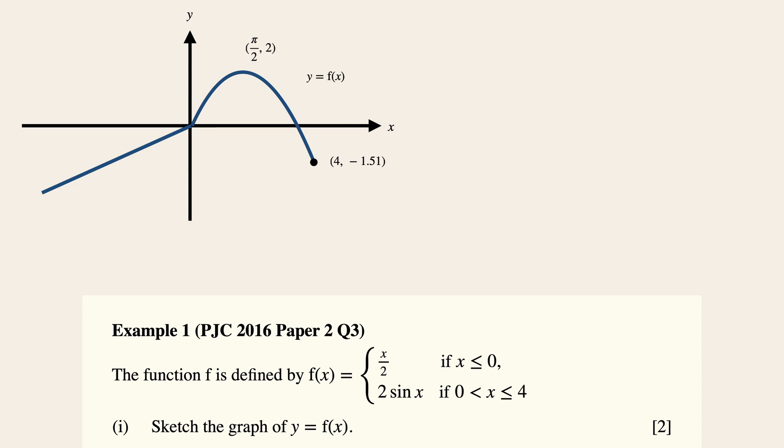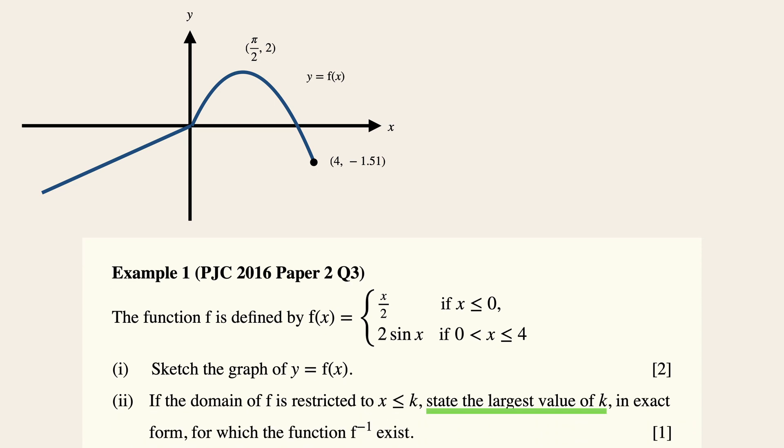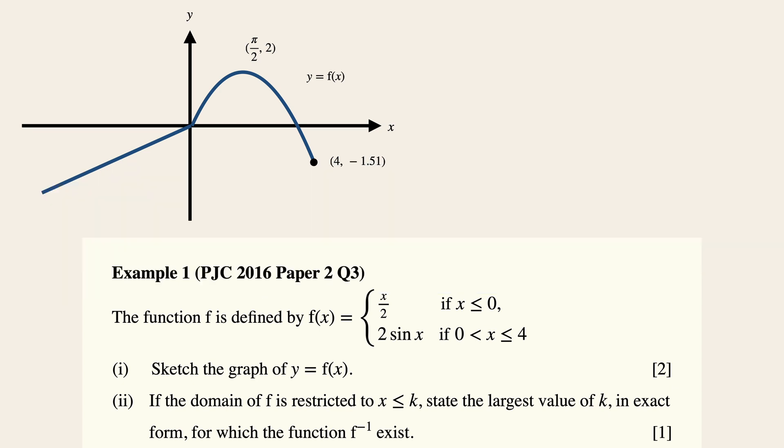So now for part 2, we need to restrict the domain to the largest value of k, so that the inverse of f exists. Now remember for the condition for an inverse function to exist, the function f must be a one-to-one function. So let's drop an imaginary vertical line in your mind to denote x is equals to k as a boundary marker and include a horizontal line to check for a one-to-one function.